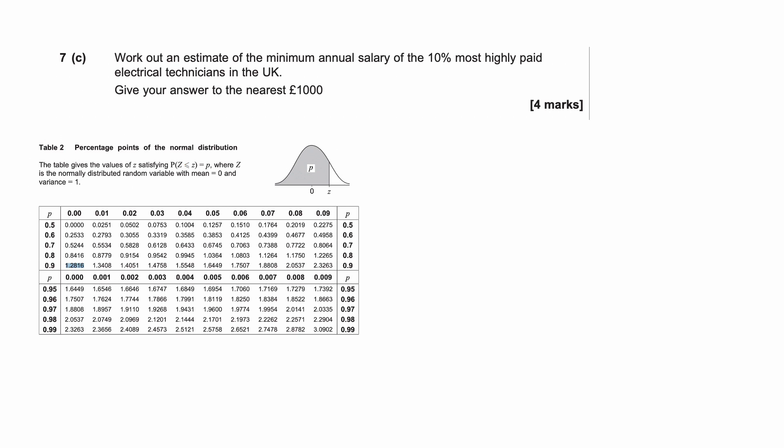For the final part we use Table 2 of the statistical tables because we're given a percentage. We're looking at the top 10% of earners, which means everything to the left of that threshold is 90% of the data. We look up 0.9 (90% as a decimal) in the table. The highlighted value is z = 1.2816.